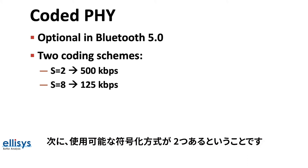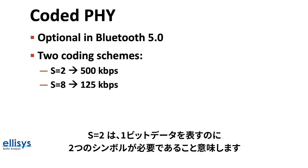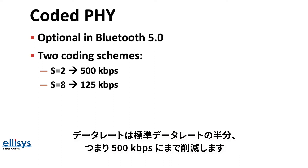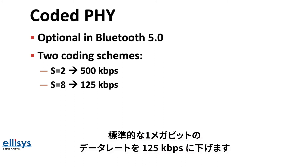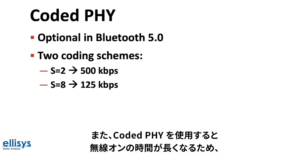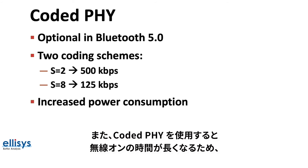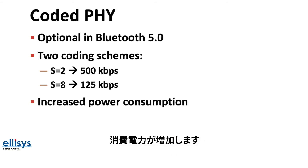Second, there are two coding schemes available. S=2, which means two symbols per data bit, cuts the data rate to half the standard rate — 500 kilobits per second. The other is S=8, which uses eight symbols per data bit, reducing the data rate from 1 megabit per second down to 125 kilobits per second. In addition, using Coded PHY will result in increased power consumption because of the radio on time.